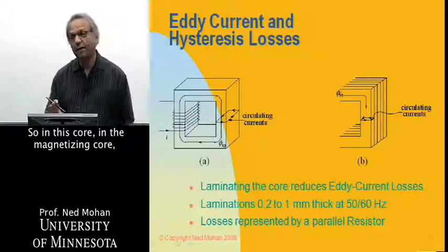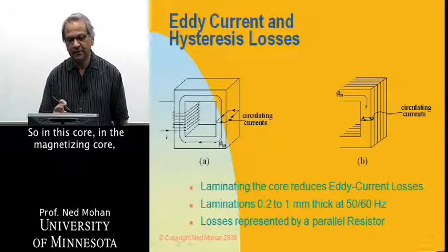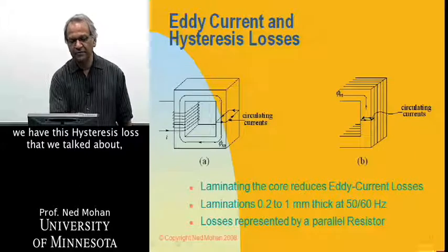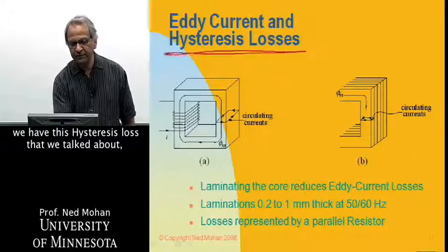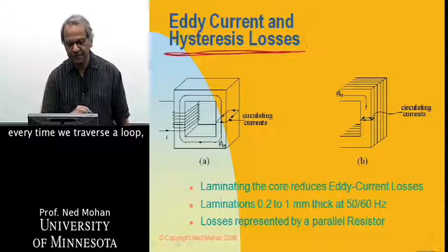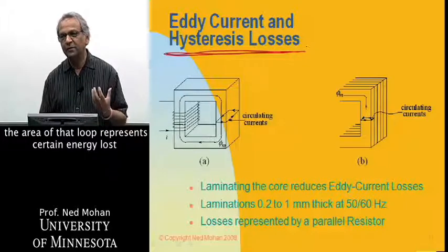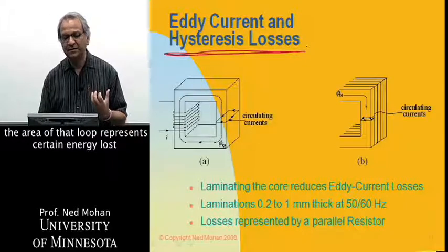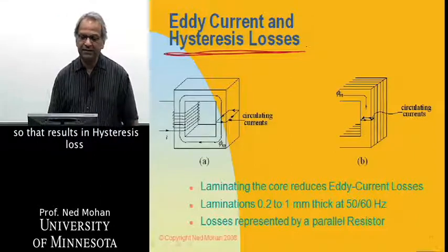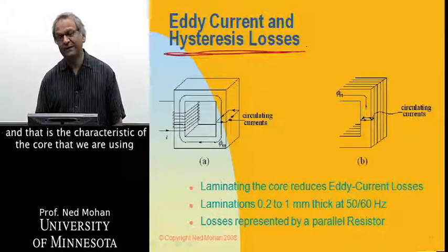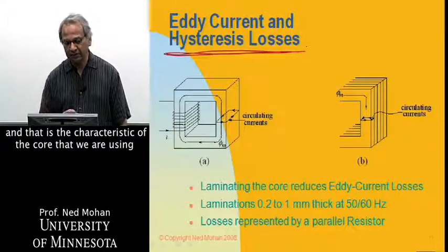So in this core, in the magnetizing core, we have this hysteresis loss that we talked about. Every time we traverse a loop, the area of that loop represents certain energy lost. So that results in hysteresis loss, and that is the characteristic of the core that we are using.